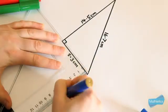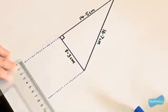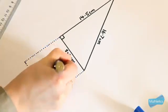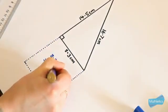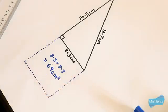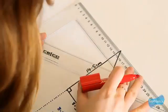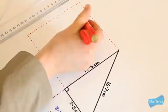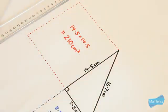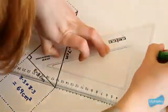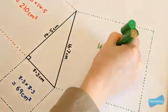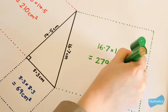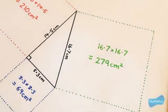If I use these sides to make squares then the area of the first square will be 8.3 times 8.3 or about 69 square centimeters. The area of the second square will be 14.5 times 14.5 or about 210 square centimeters. The area of the third square will be 16.7 times 16.7 which is 279 square centimeters.